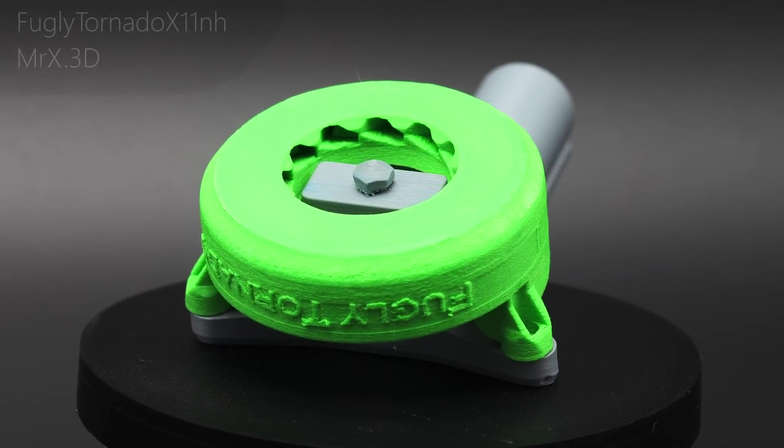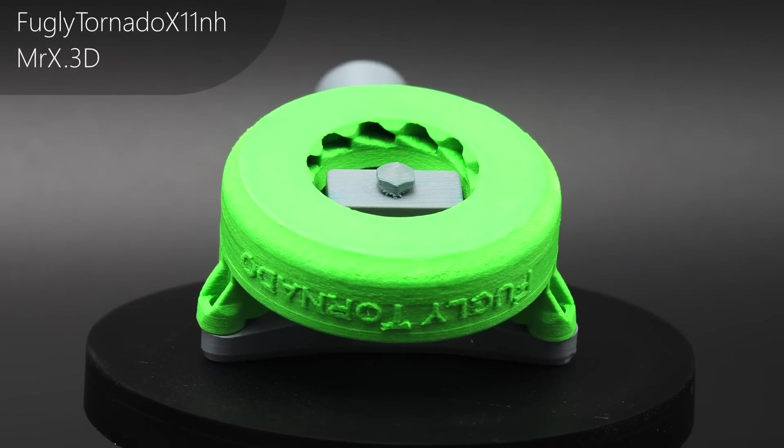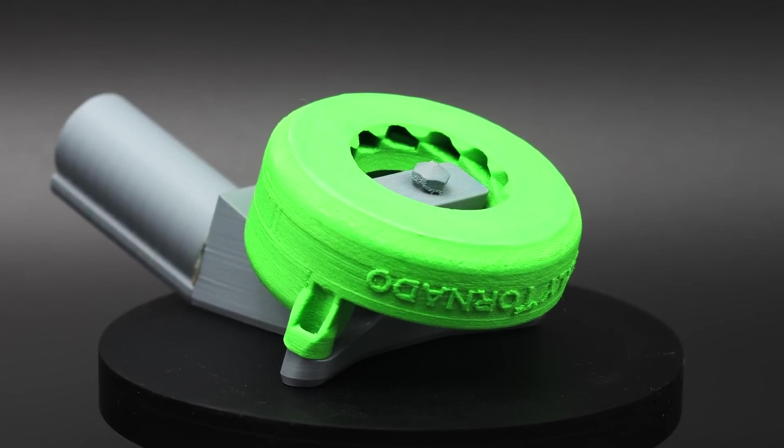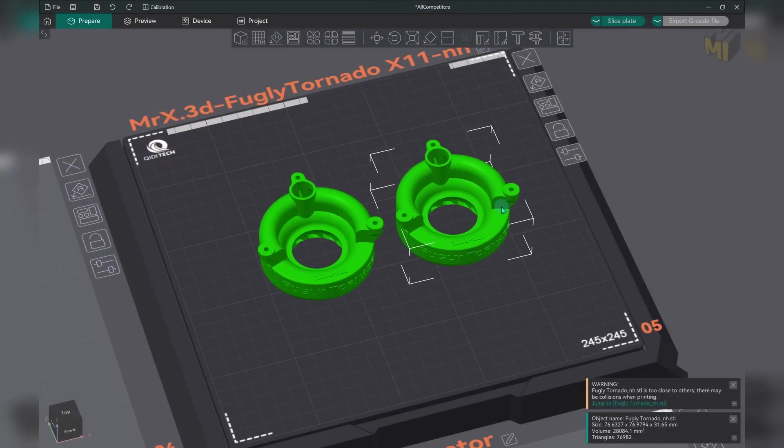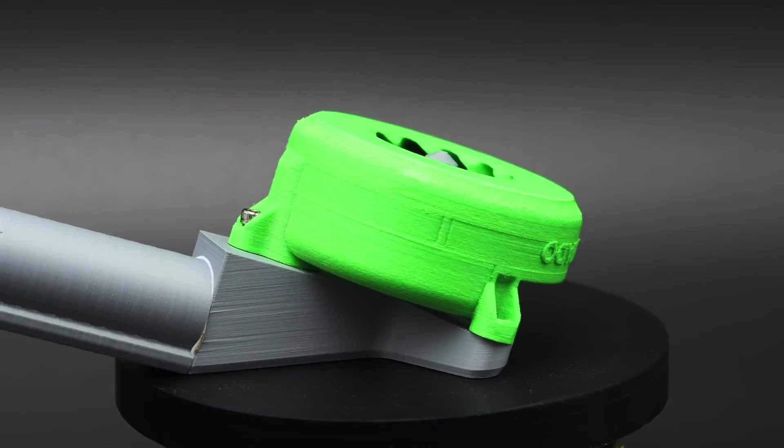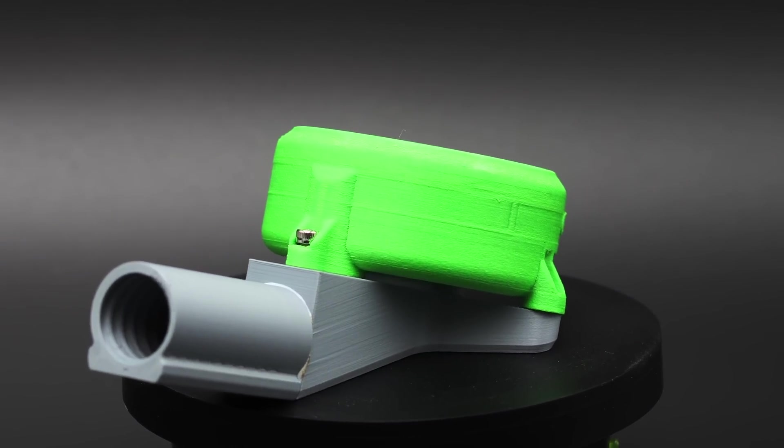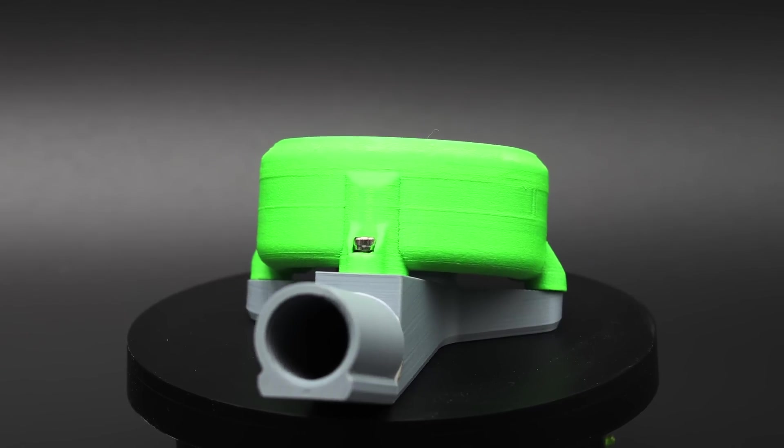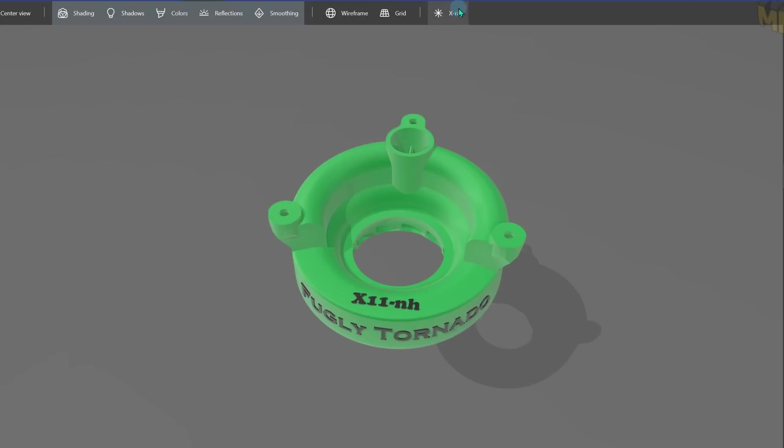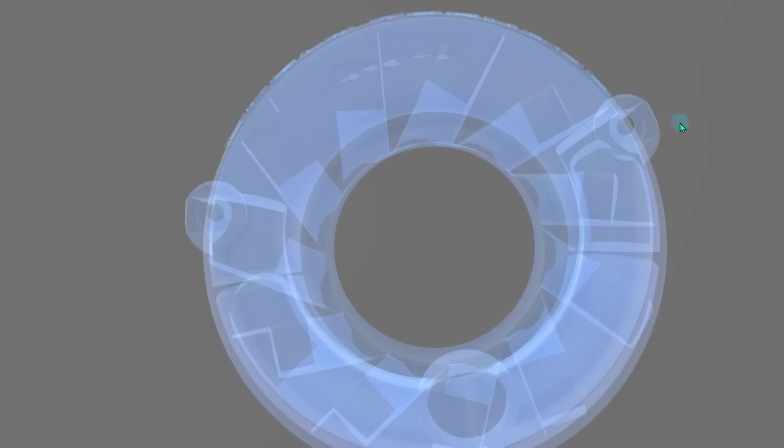Next up we have the Fugly Tornado X11NH by MrX3D and the NH stands for Northern Hemisphere so depending on where you live you may need to mirror the model for the correct vortex direction. This again is a wraparound design but it's actually completely different from any we've seen before. This one is quite deep, fairly heavy. It comes in at 25 grams making it the heaviest one so far. It has these integral passages to send air out to create a cyclonic action.